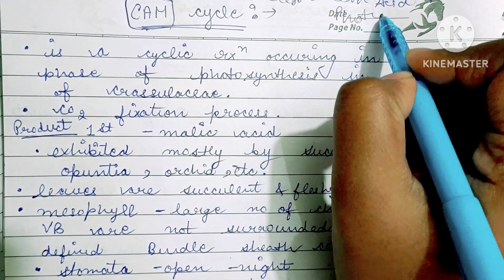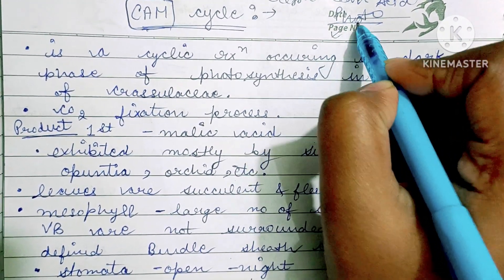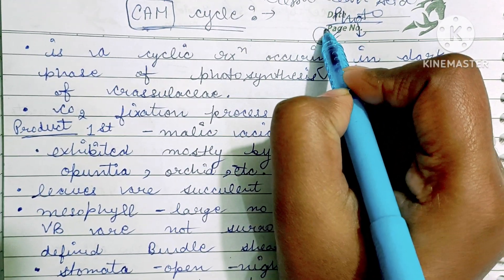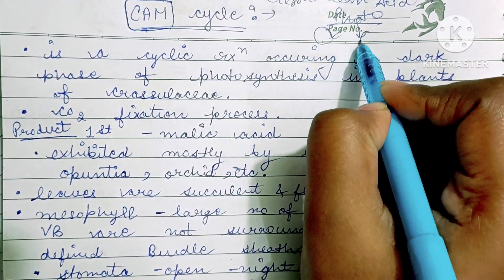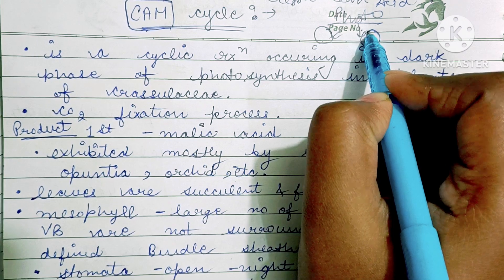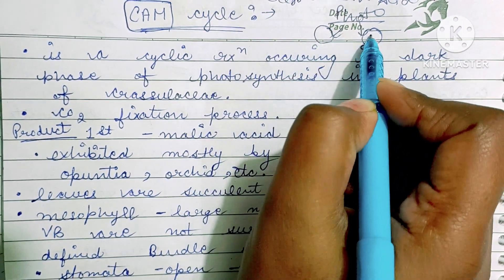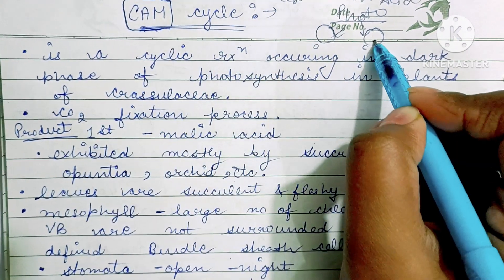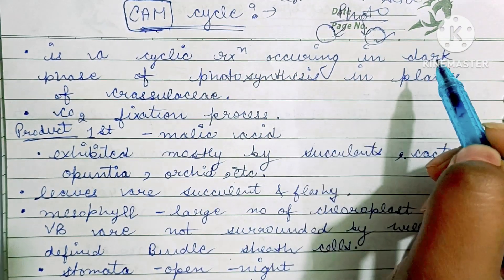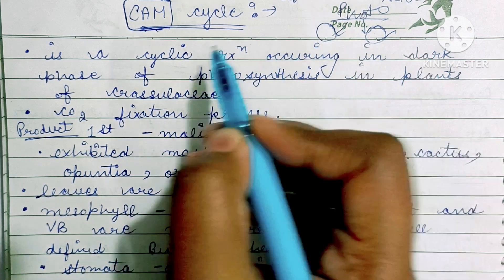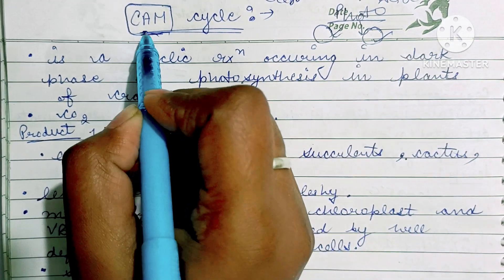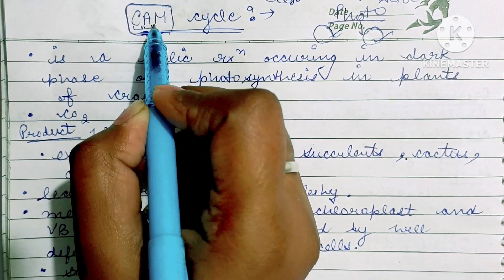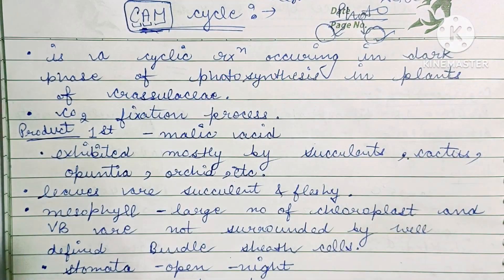Photosynthesis has two phases: light and dark phases. Some reactions occur in the light phase and some in the dark phase. So CAM cycle is a reaction which occurs in the dark phase of photosynthesis. The full form of CAM cycle is Crassulacean Acid Metabolism.